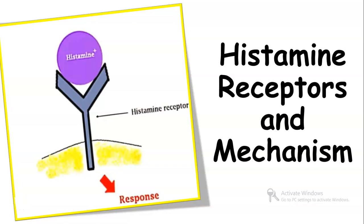Hello everyone, welcome to my channel Pharmacy Curriculum. Today we are going to study about histamine receptors and their mechanism. Before that, I will give you a small summary of histamine. Histamine is a chemical stored within our body, produced by cells known as mast cells. It is a protein molecule with the chemical formula C5H9N3.